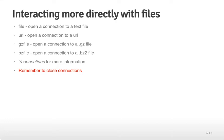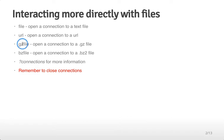There are a couple of different kinds of connections you can open. One is the file command, which opens a connection to a text file either locally on your computer or on the web. Another is URL, which opens a connection to a URL on the web that doesn't necessarily have to be a text file. You can also open a connection to a gzipped file with gz, or a bz2 file with a bz file connection.